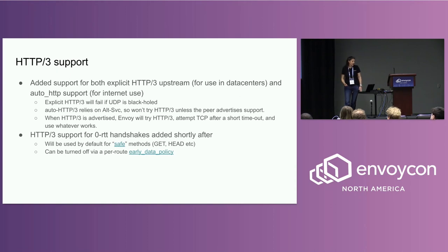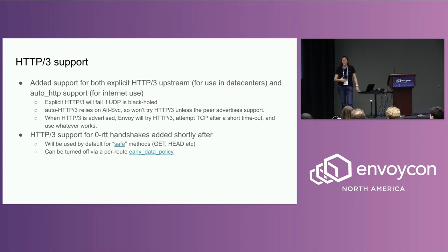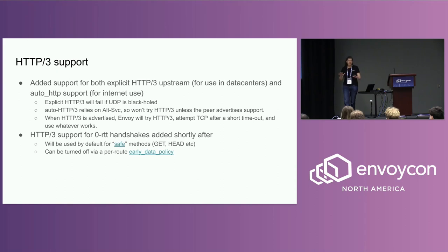Shortly after we added HTTP3 support, we added support for zero round-trip handshakes. This is one of the signature features of HTTP3. Basically, if you've communicated with an endpoint before, you cache your credentials. The next time you talk to that endpoint, you send those credentials and it can immediately start sending GET and HEAD requests without waiting for a TCP or TLS handshake. This is awesome for latency. It'll be used by default for safe methods, but if you don't want to use it, you can turn it off via a per-route early data policy configuration.